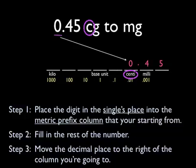Finally, step 3 is to move the decimal place to the right of the column you're going to. In this case, we're starting from centi, but we want to finish in milli, so we'll move the decimal point to the right of the milli column. Good, we're done now. And so our answer is when we're converting 0.45 centigrams to milligrams is 4.5.